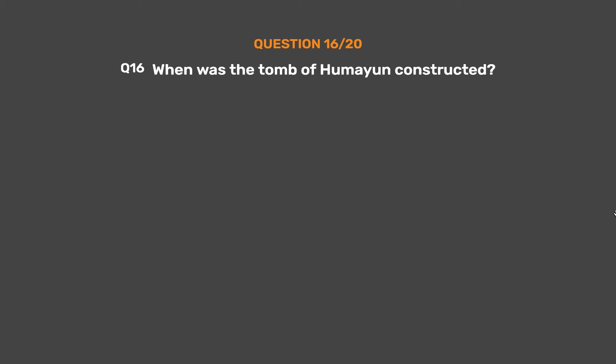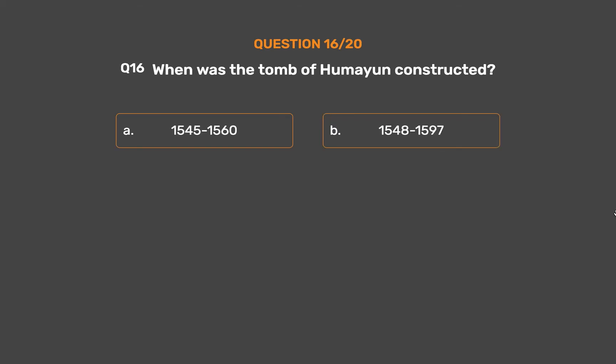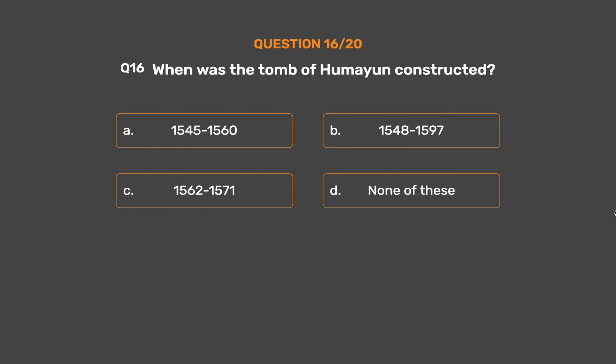Question No. 16: When was the tomb of Humayun constructed? Option A: 1545 to 1560. Option B: 1548 to 1597. Option C: 1562 to 1571. Option D: None of these.